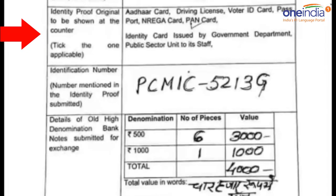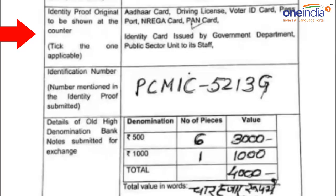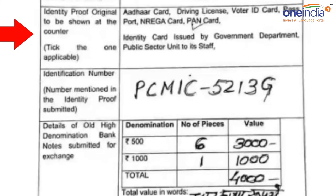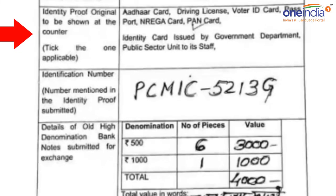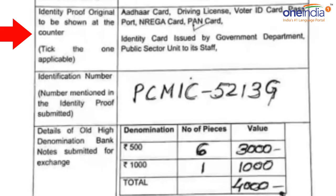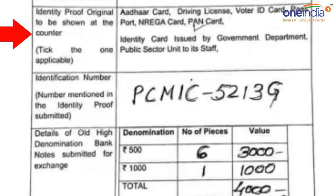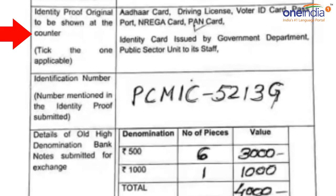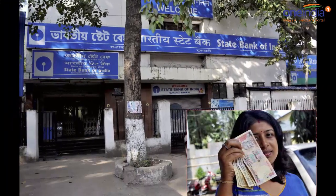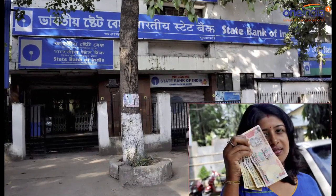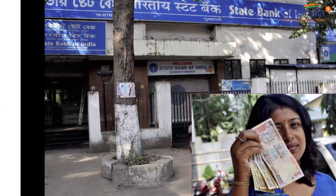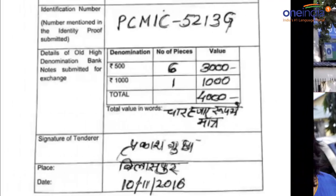There are various options: Aadhaar card, driver's license, voter ID card, passport, NREGA card, and PAN card. These are the seven cards that the government has validated for citizens to show at the bank counters, through which they can deposit their money. After that, you have to tick which identity proof you are showing.